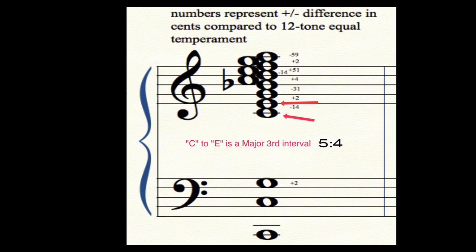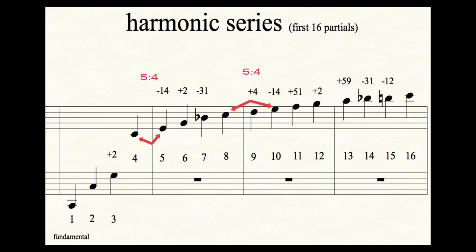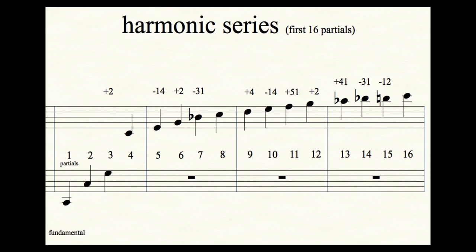We refer to that major third as a 5:4 because we're talking about the interval size between the fifth partial and the fourth partial. Microtonalists consider a 5:4 the true major third, and the major third in 12-tone equal temperament is actually considered 14 cents sharp. Another example is a 7:4 - you take the seventh partial and measure it against the fourth partial. This is the minor seventh tuned down about 31 cents compared to 12-tone equal temperament.